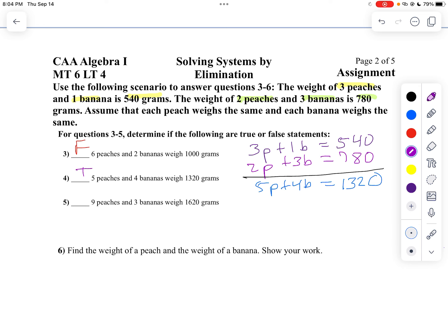How about nine peaches and three bananas? Oh, that would be my top equation times three, wouldn't it? So nine peaches plus three bananas. Take 540 times three, and I get zero, four times three is 12, carry the one, I get 16. Oh, that one's true also. So I'm going to say true.